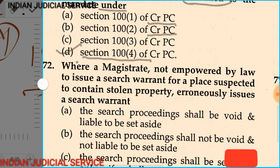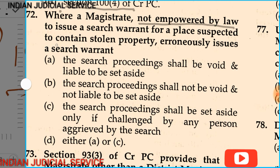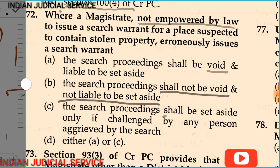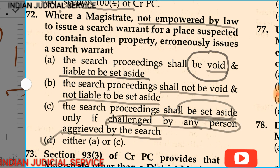Question number 72: Where a magistrate not empowered by law to issue a search warrant for a place suspected of containing stolen property erroneously issues a search warrant, the options are: (A) the search proceeding shall be void and liable to be set aside; (B) the search proceeding shall not be void; (C) the search proceeding shall be set aside only if challenged by a person aggrieved; (D) either A or C. The answer is option D — either A or C is correct.